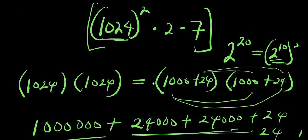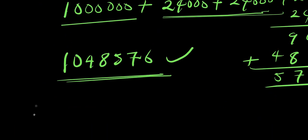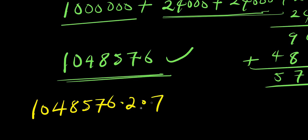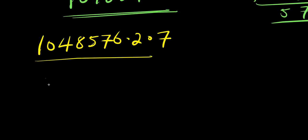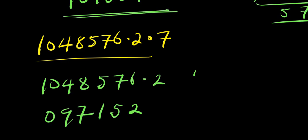So we have 1,048,576 times 2 times 7. Let's multiply by 2 first: 2 times 6 is 12, write 2 carry 1; 2 times 7 is 14 plus 1 is 15, write 5 carry 1; 2 times 5 is 10 plus 1 is 11, write 1 carry 1; 2 times 8 is 16 plus 1 is 17, write 7 carry 1; 2 times 4 is 8 plus 1 is 9; 2 times 0 is 0; 2 times 1 is 2. So 1,048,576 times 2 equals 2,097,152.